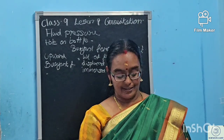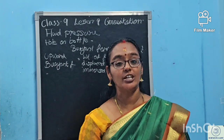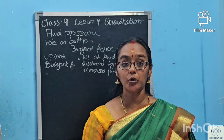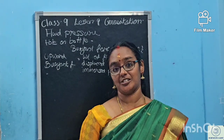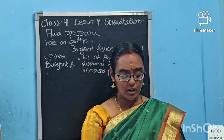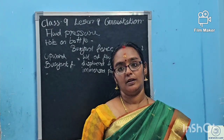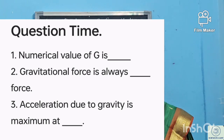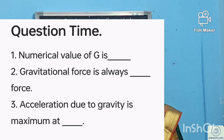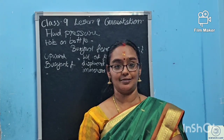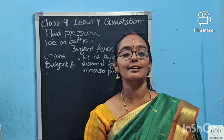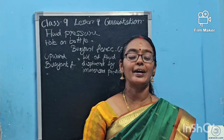This is the question time. First question: what is the numerical value of G? Write the value along with its unit. Second question: gravitational force is always what kind of force — repulsive or attractive? Third question: acceleration due to gravity is maximum at what — poles or equator? I think all the answers are easy for you. We can meet in the next class. Bye.